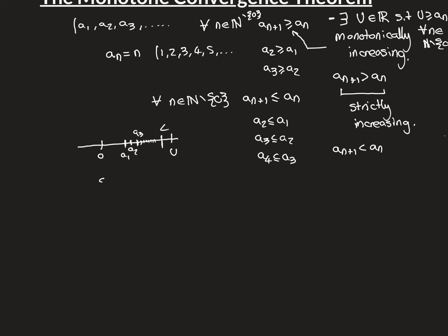We put all terms of the sequence into a set {a_n : n ∈ ℕ\ {0}} and take its supremum. By the least upper bound axiom of the real numbers, since this set is bounded above by u, the supremum must exist. My claim is that the sequence converges to that limit L.